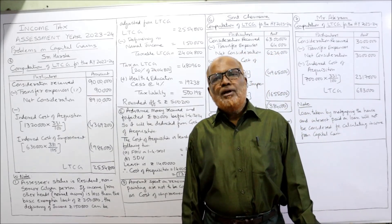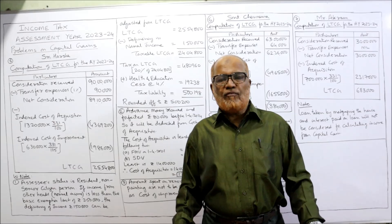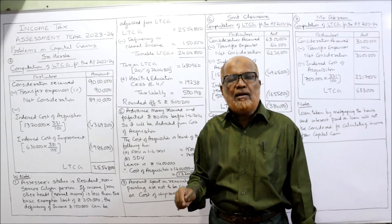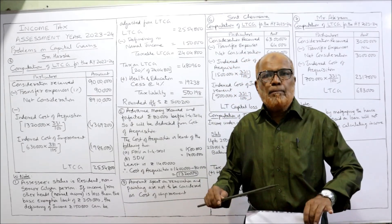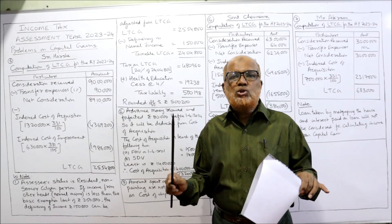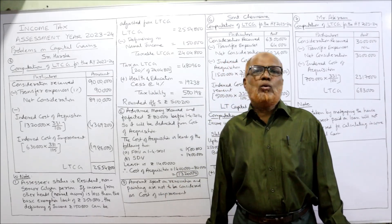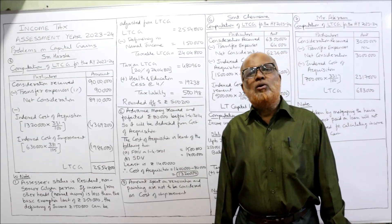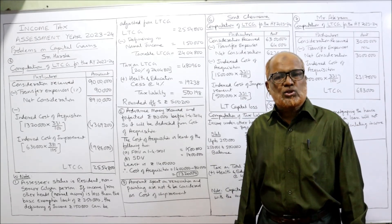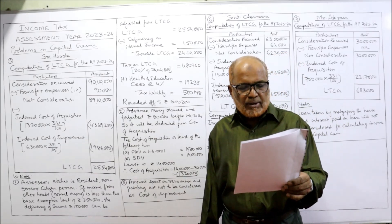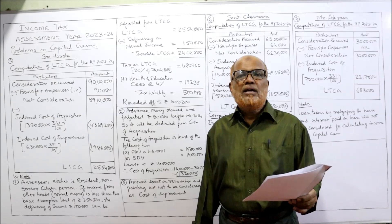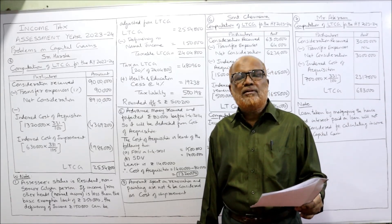Income Tax Act has given the provision: improvement means adding one more room or one more floor. That is improvement. But simply renovating the house, repairing, or painting is not called improvement — it is just maintenance. So the amount incurred on renovating and painting should be ignored; it should not be considered as improvement. In working notes, you should write: amount spent on renovation or painting will not be considered as improvement and should not be taken as indexed cost of improvement. We need to calculate income from capital gain and tax liability; income from other heads is Rs. 1,00,000.